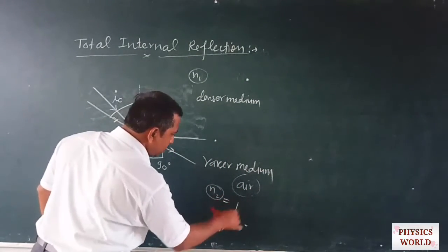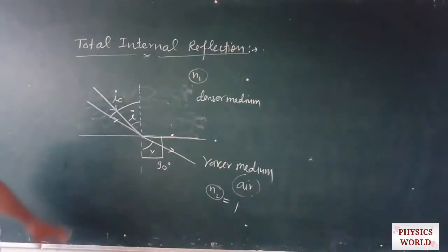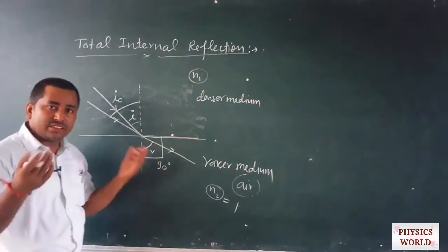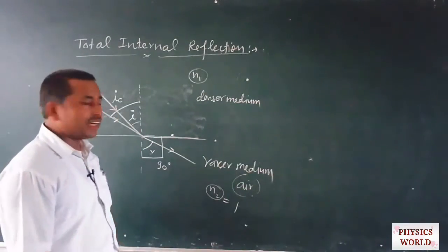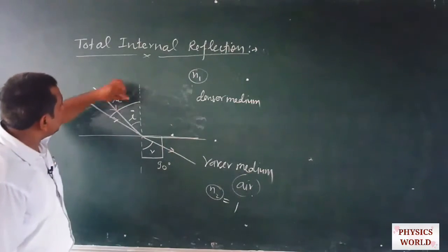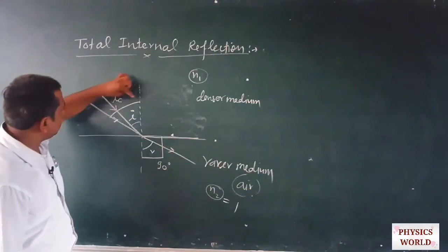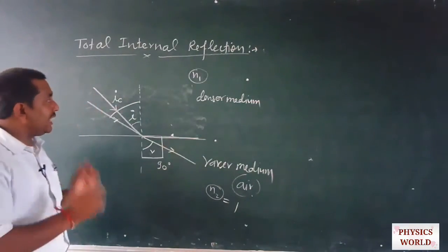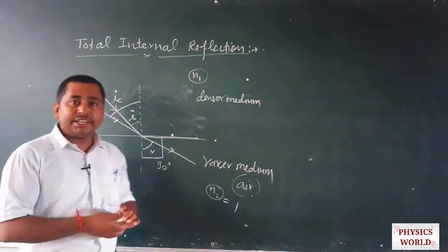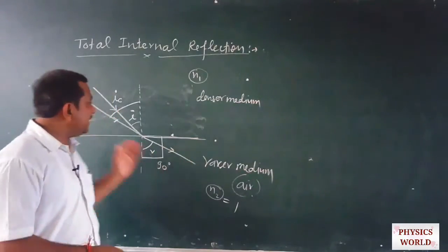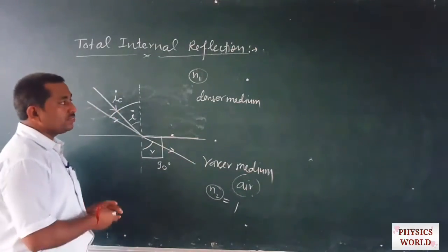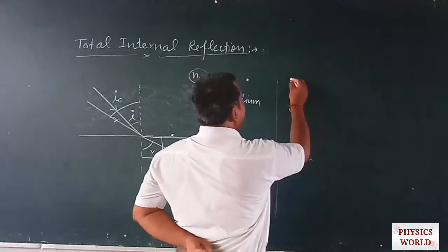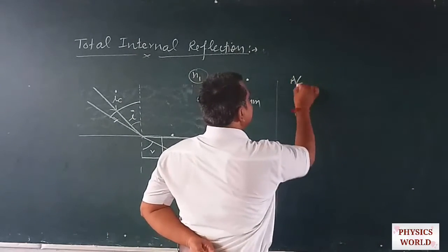If we take the rarer medium as air, we can consider its refractive index n2 as 1. If the denser medium is water, glass, etc., then the critical angle for this medium can be easily calculated with the help of Snell's law.